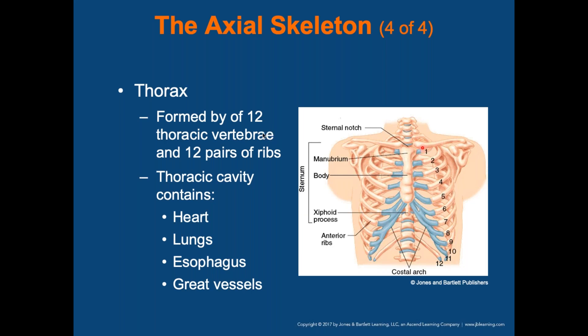The ribs start at the clavicle — rib one, two, three, four counting down. Between each rib are the intercostal spaces, which are key landmarks for a 12-lead EKG — especially the fourth and fifth intercostal spaces. Palpate the chest to find the ribs and check for equal rise and fall to rule out flail chest, which occurs with two or more broken ribs in the same area.